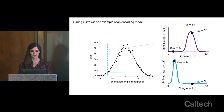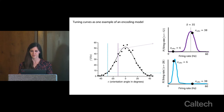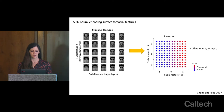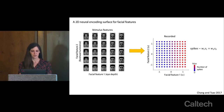This process of maximizing the likelihood of the data via optimization of model parameters is at the core of fitting statistical models in neuroscience. You can also get fancier than a 1D tuning curve — this is a 2D neural encoding surface for features of faces fit to a recorded neuron by Doris Tsao's lab in 2017, recording from neurons in face patches.